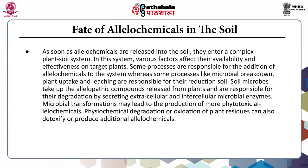As soon as allelochemicals are released into the soil, they enter a complex plant-soil system. Various factors affect their availability and effectiveness on target plants. Some processes are responsible for addition of allelochemicals to the system, whereas others like microbial breakdown, plant uptake and leaching are responsible for their reduction in the soil. Soil microbes take up the allelopathic compounds and degrade them by secreting extracellular and intracellular microbial enzymes. Microbial transformations may also lead to production of more phytotoxic allelochemicals.